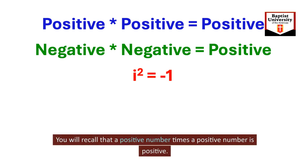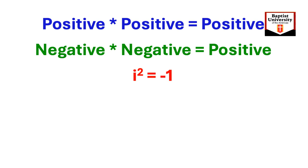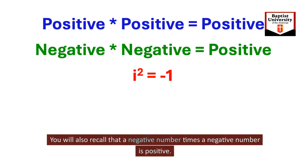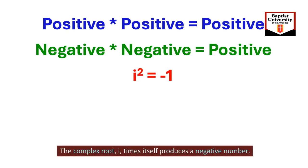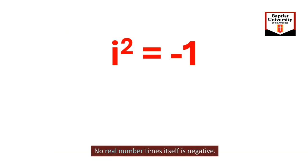You will recall that a positive number times a positive number is positive. You will also recall that a negative number times a negative number is positive. The complex root, I times itself, produces a negative number. No real number times itself is negative.